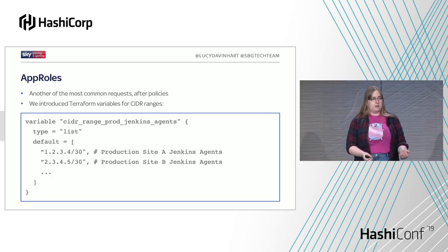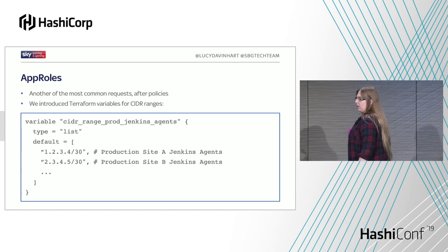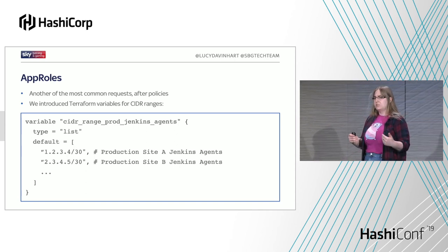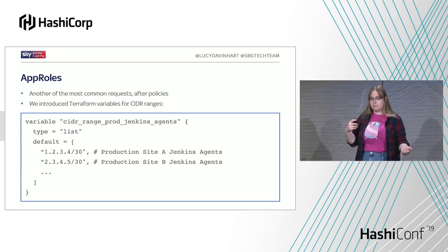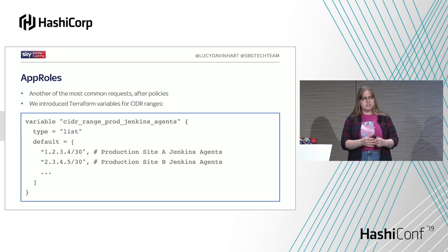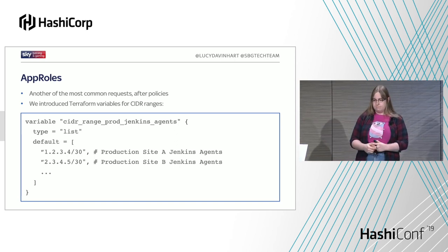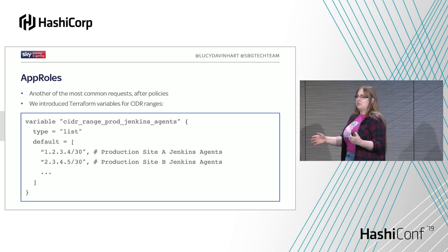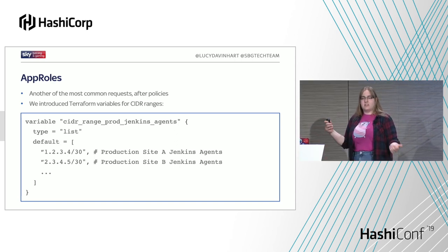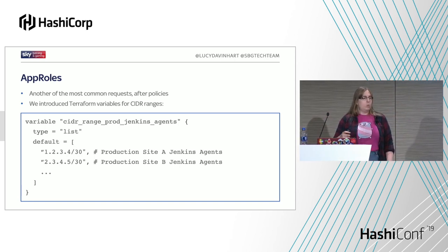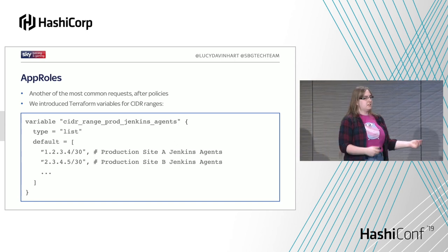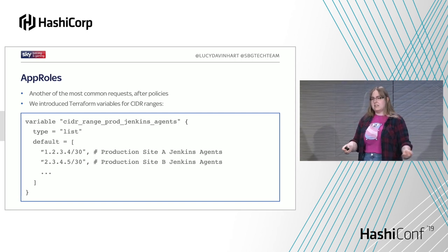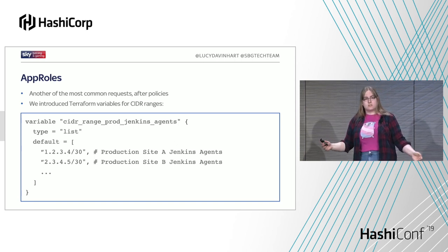The next thing we added is app roles — our second most common authentication mechanism for Vault. We had about 160 of these when we added it to the pipeline back in September 2018; since then that number has almost doubled. The majority are used to give Jenkins jobs access to Vault, so they should all be configured fairly similarly. But depending on who was implementing them, things looked a little different — usually around the IP addresses for the Jenkins agents. When we added this to the pipeline, we documented and recommended that users start using Terraform variables for that sort of thing, so that whenever the team adds new Jenkins agents, it's just one file to update and that updates hundreds of app roles in one go.